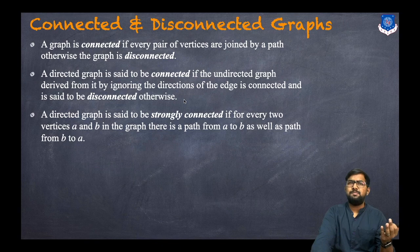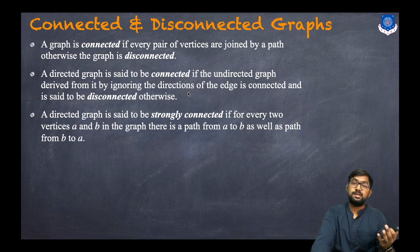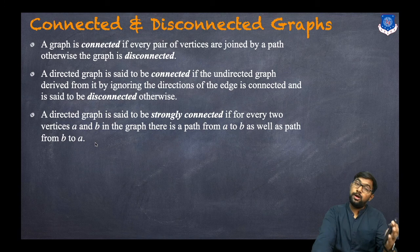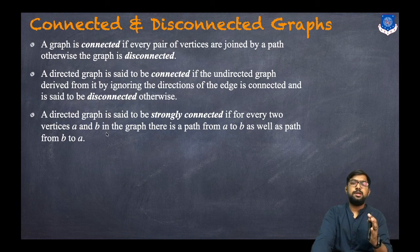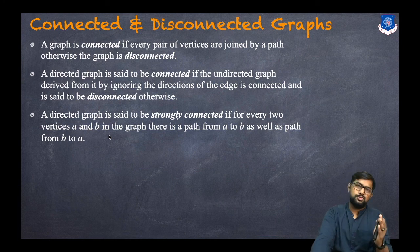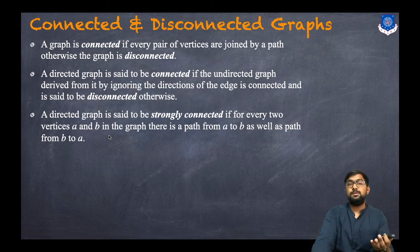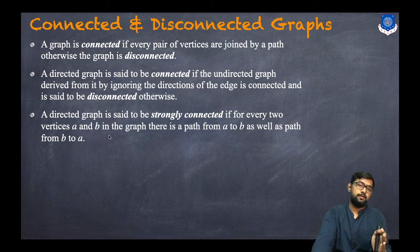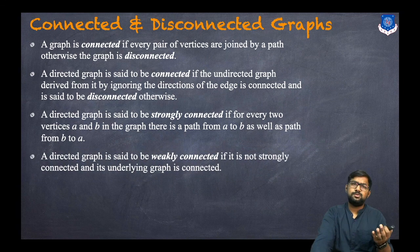If we don't have any path between vertices then it is called a disconnected graph. A directed graph is said to be strongly connected when for every two vertices a and b in the graph, there is a path from a to b as well as a path from b to a. There must be paths in both directions — we can reach from a to b as well as b to a — so then it is called a strongly connected graph.